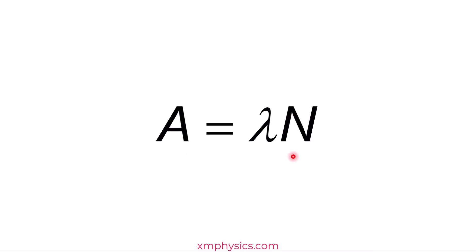So we write here, A equals to lambda N. A represents activity. Now what is activity? Well, activity just means number of decay per unit time. N represents the number of undecayed nuclei. As we said, we believe that A is directly proportional to N. The constant of proportionality is called the decay constant, denoted by symbol lambda.